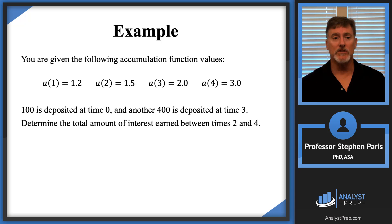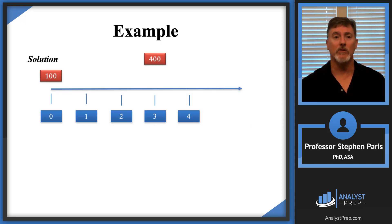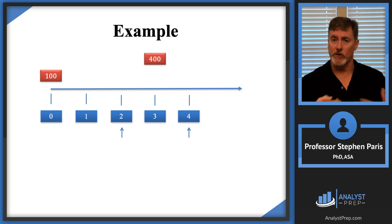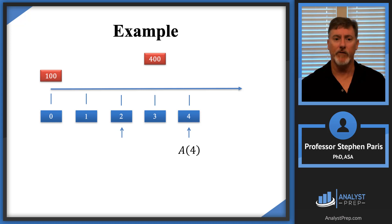The $100 is deposited at time 0 and the $400 is deposited at time 3 — let's capture that on a timeline. We're trying to find the interest between time 2 and time 4. The first approach we'll take is to look at the total amount in the account at time 4, which is the amount function A(4), and compare that to the total amount at time 2.